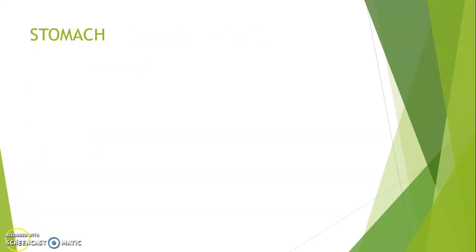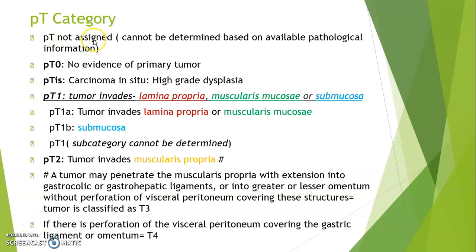Now the pTNM staging of the stomach. PT not assigned when it cannot be determined from available pathological information. T0 — no evidence of primary tumor. TIS — carcinoma in situ or high-grade dysplasia. PT1 is when tumor invades lamina propria, muscularis mucosae, or submucosa, similar to esophagus. PT1A when tumor invades lamina propria or muscularis mucosae; PT1B when tumor invades submucosa; PT1 when subcategory cannot be determined. PT2 is when tumor invades muscularis propria.